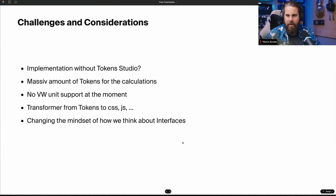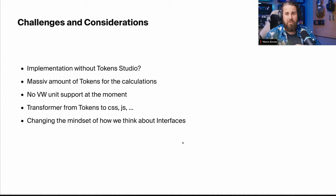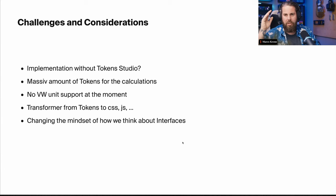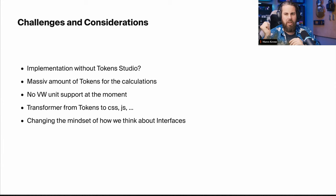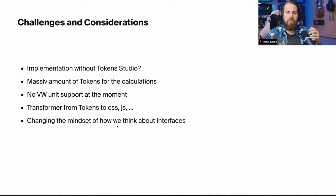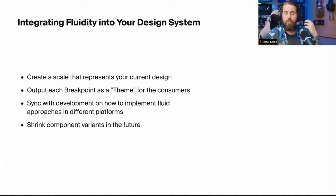Challenges and considerations: without Token Studio I don't see how you could implement this — you need it. You end up with quite a massive amount of tokens, as each step requires calculations, variables, and your relative value, plus the clamp function. We currently don't have viewport width unit support, but Token Studio will likely add this in the future. Transforming to CSS and JSON is also tricky — you replace the scale of 100 with a vw unit. The biggest challenge is actually changing your mindset to think more fluidly about design.